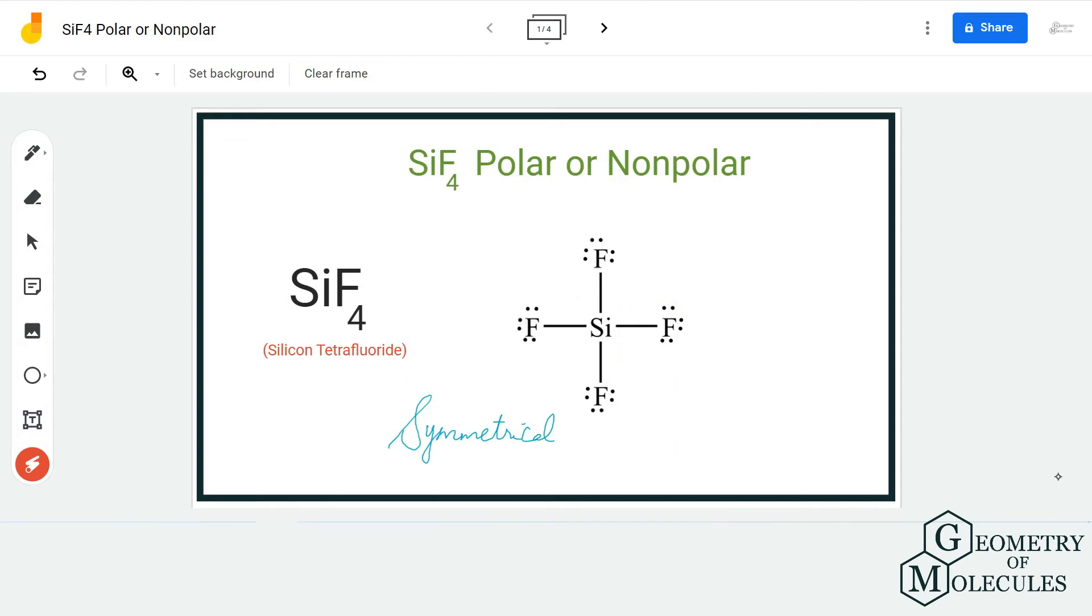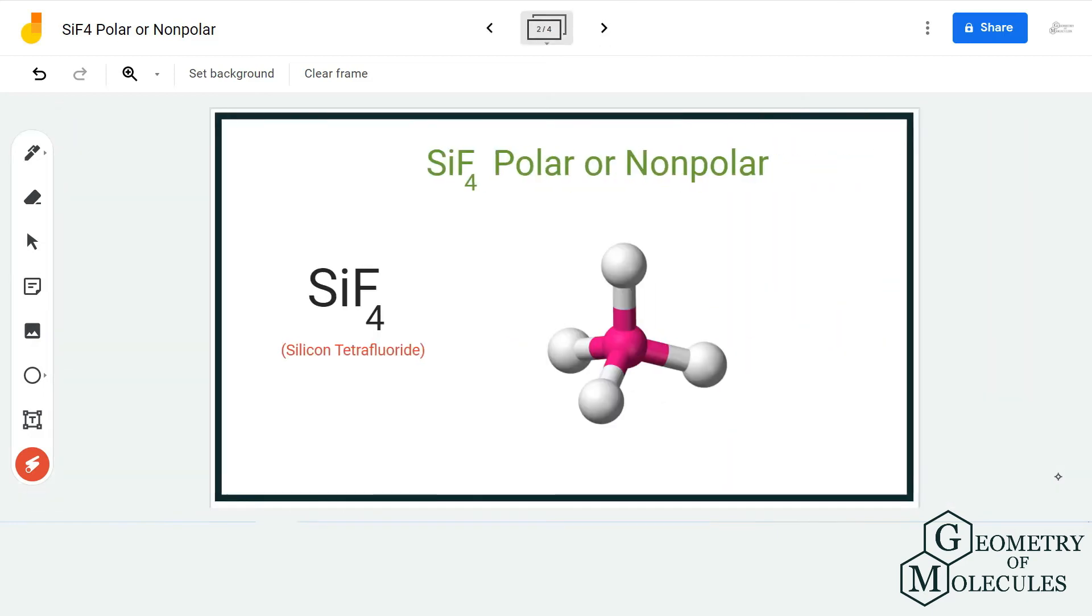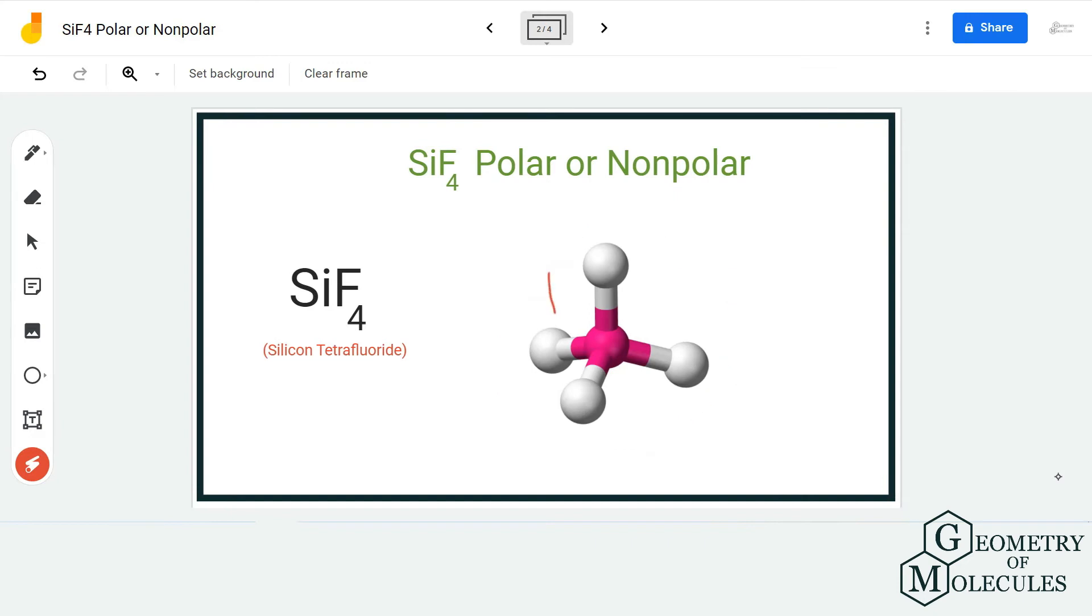But let's not come to that conclusion without looking at its shape and checking the net dipole moment. If you look at its shape, the shape is tetrahedral, as you can see. All four fluorine atoms are spread out evenly in the plane; they try to cancel the repulsive forces by spreading out evenly so that there is no uneven distribution of charges.